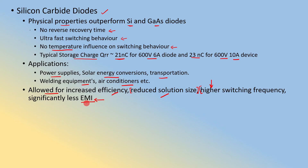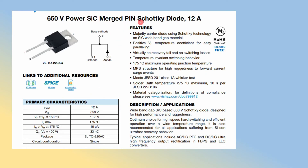Silicon carbide diodes produce significantly less electromagnetic interference (EMI). If your application requires less EMI, it is better to go with a silicon carbide type diode. Looking at the Vishay Semiconductor data sheet for a silicon carbide merged Schottky diode, it clearly states virtually no reverse recovery time and no switching losses — the reverse recovery time is either not listed or extremely small, confirming its ultra-fast nature.